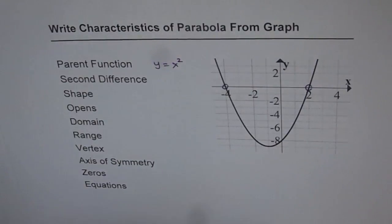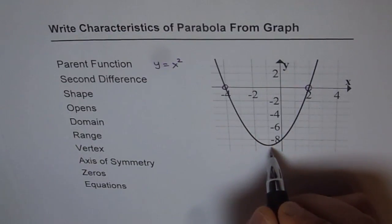Second difference tells us about the value of a. Now, the step functions for a is 1, 3, 5, 7.